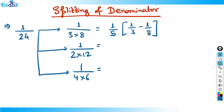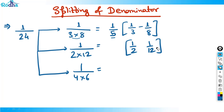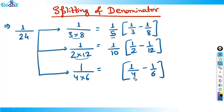So 1 by 3 into 8 can be written as 1 by 3 minus 1 by 8, and the difference of 3 and 8 is 5, so this 5 will be written outside. Similarly, 1 by 2 into 12 is written as 1 by 2 minus 1 by 12, and you divide by the difference 10 outside. Same way, 1 by 4 minus 1 by 6, difference of 2 goes outside.